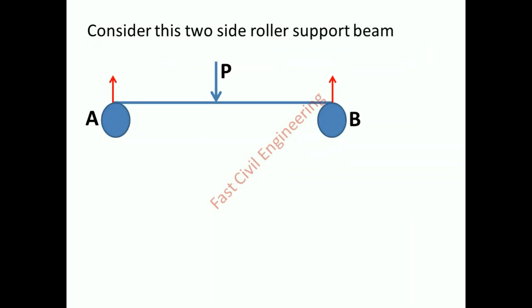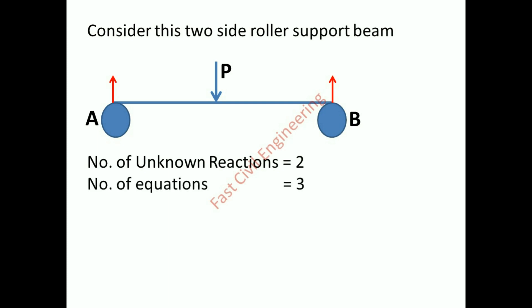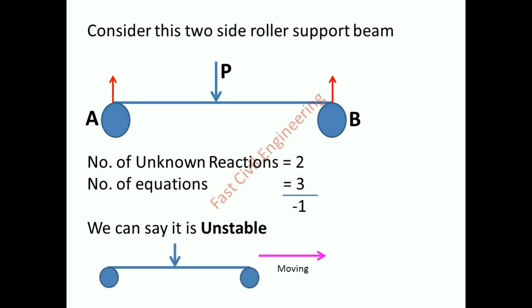Consider this two-side roller support beam. Number of unknown reactions equals two, number of equations equals three. Number of unknown reactions is less than number of equations — we can say this is unstable.